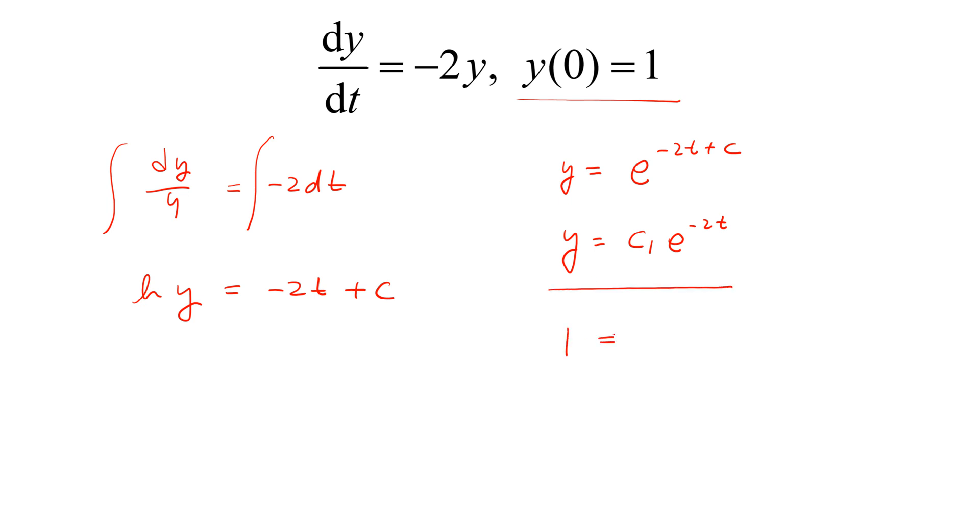So, y should be equal to 1 and t equal to 0, so that c1 should be 1. So, final solution will be y equals e to the power of minus 2t.